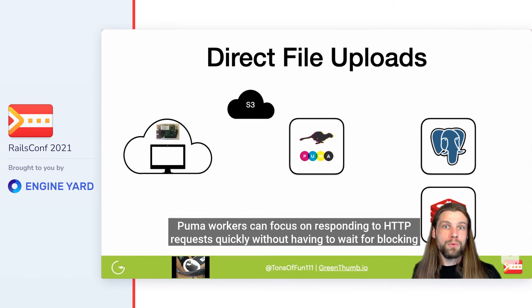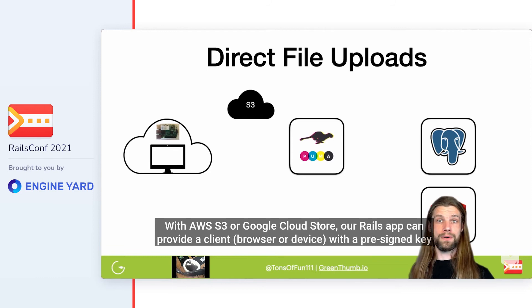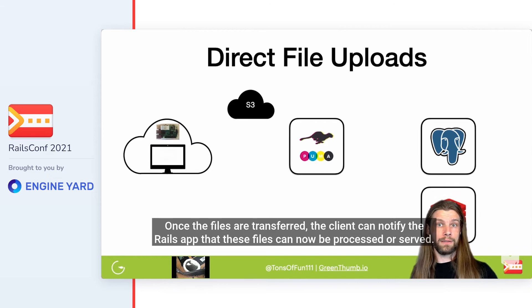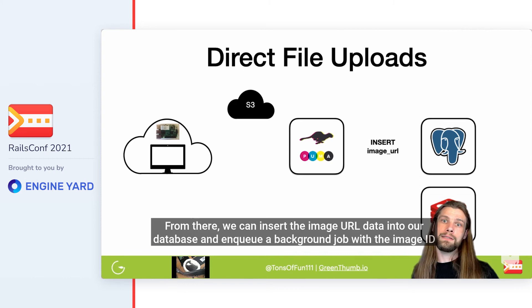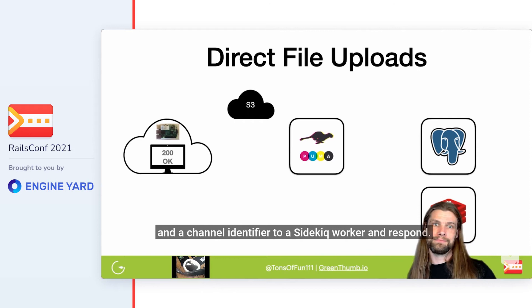Direct file uploads are a great way to relieve pressure on our Rails apps. Puma workers can focus on responding to HTTP requests quickly without having to wait for blocking I/O from large objects like images and videos. With AWS S3 or Google Cloud Storage, our Rails app can provide a client, browser, or device with a pre-signed key to upload files to a location on our storage service directly. Once the files are transferred, the client can notify the Rails app that these files can now be processed or served. From there, we can insert the image URL data into our database and enqueue a background job with the image ID and a channel identifier to a Sidekiq worker and respond OK.